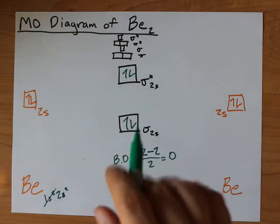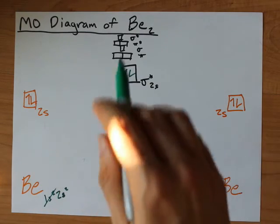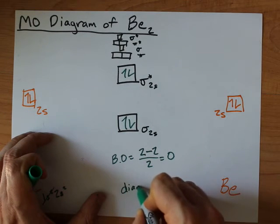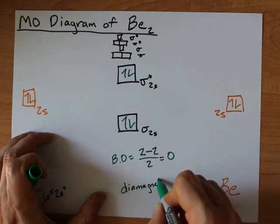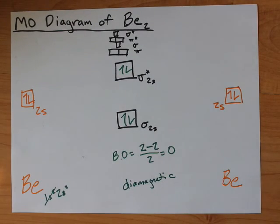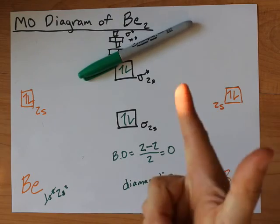The theoretical BE2 molecule also has all of its electrons paired up and so it is a diamagnetic structure. Diamagnetic molecule I should say. Cool? Cool! And that's BE2. Best of luck.